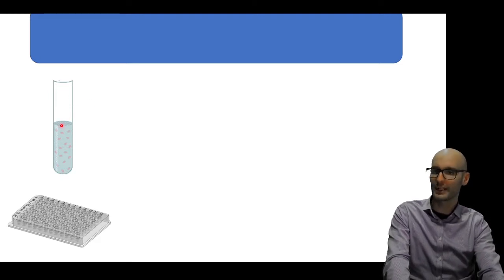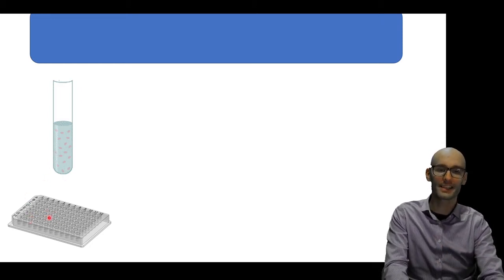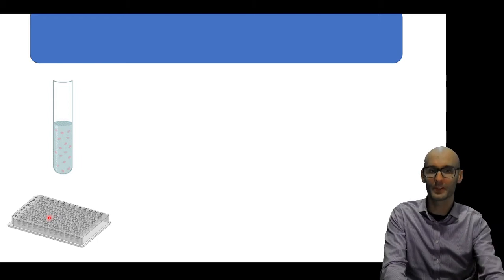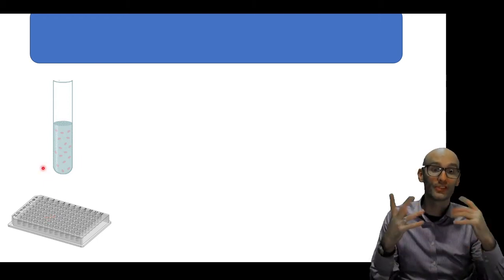Now you can do flow cytometry either on a tube, and inside this tube will contain a bunch of cells, or you can do it in a 96-well plate, and each of those wells will contain a bunch of cells.